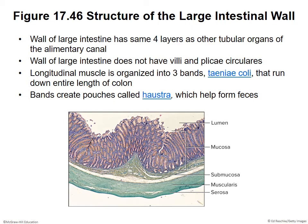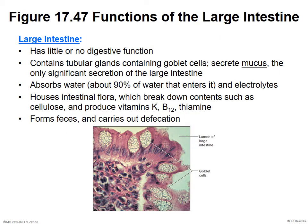The longitudinal muscle layer of the muscularis is organized into bands called teniae coli, which create the haustra pouches. As the large intestine wrings out and squeezes, pushing out water, feces is formed. The large intestine has little to no digestive function and contains glands made mainly of goblet cells that secrete mucus — which is the only significant secretion in the large intestine.